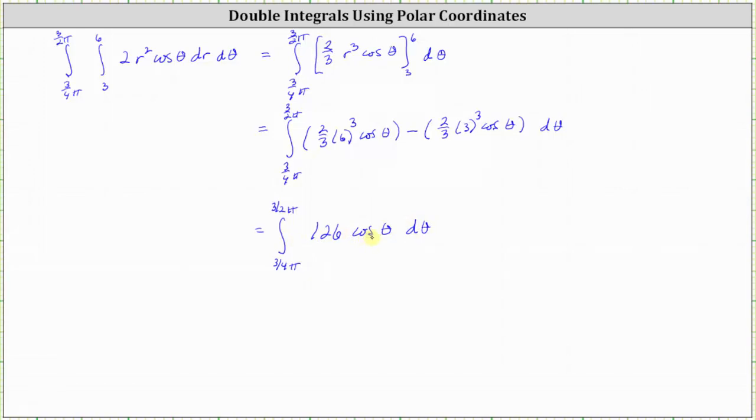The integral of 126 cosine theta with respect to theta equals 126 sine theta. Now we find big F of 3/2 pi minus big F of 3/4 pi, which gives us 126 times the difference of sine 3/2 pi and sine 3/4 pi.